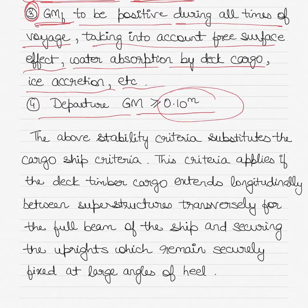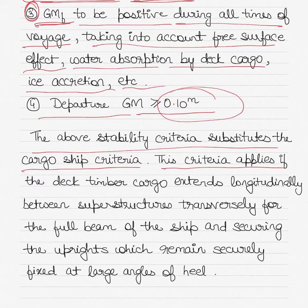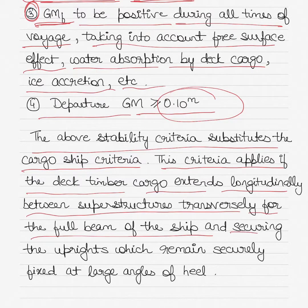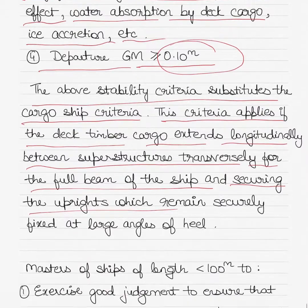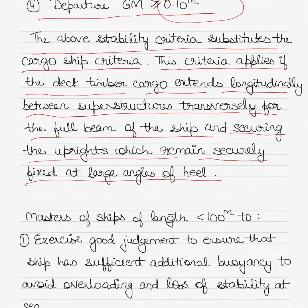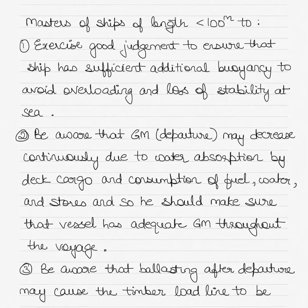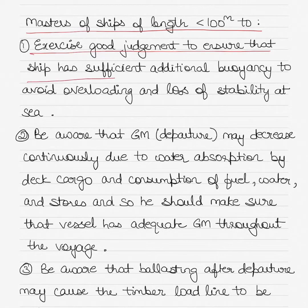The above stability criteria substitutes the cargo ship criteria when timber is loaded and carried as cargo. This criteria applies if the deck timber cargo extends longitudinally between superstructures and transversely for the full beam of the ship, with uprights remaining securely fitted at large angles of heel. Masters of ships less than 100 meters in length must additionally exercise good judgment to ensure sufficient additional buoyancy to avoid overloading and loss of stability at sea.